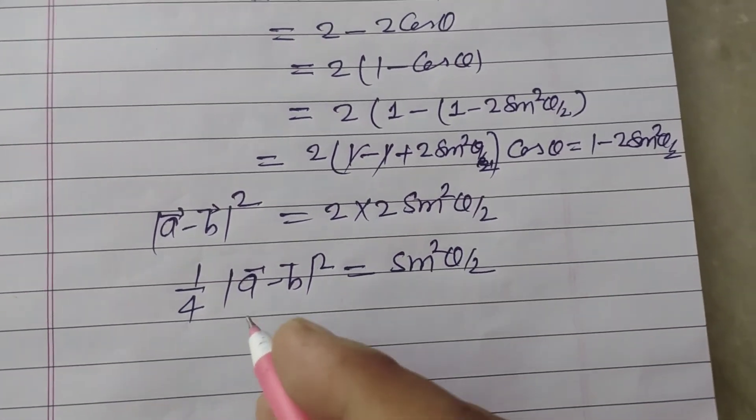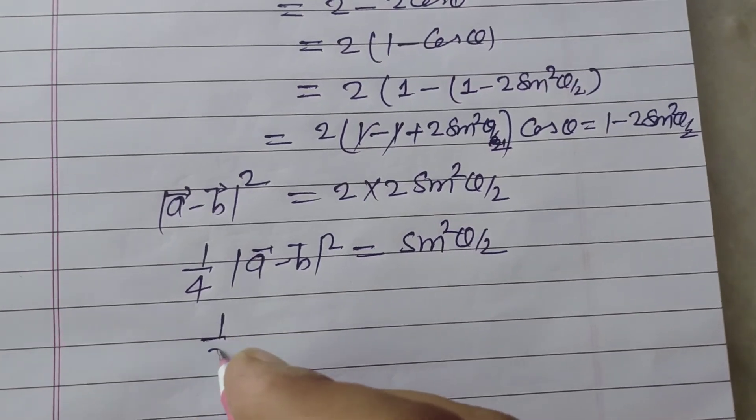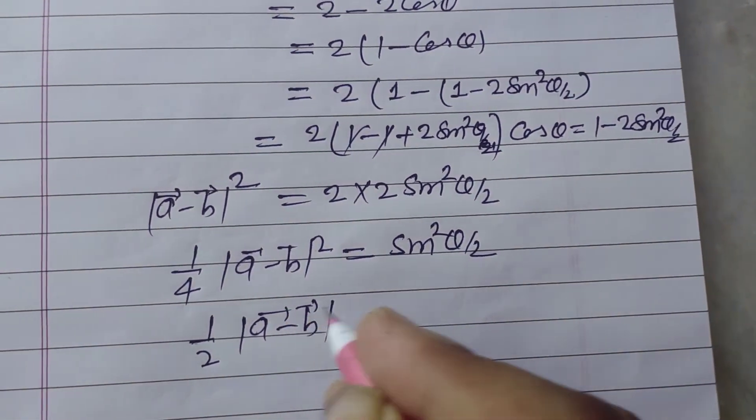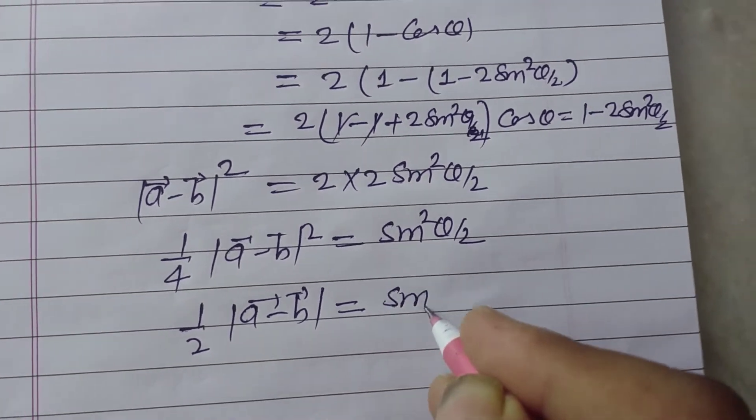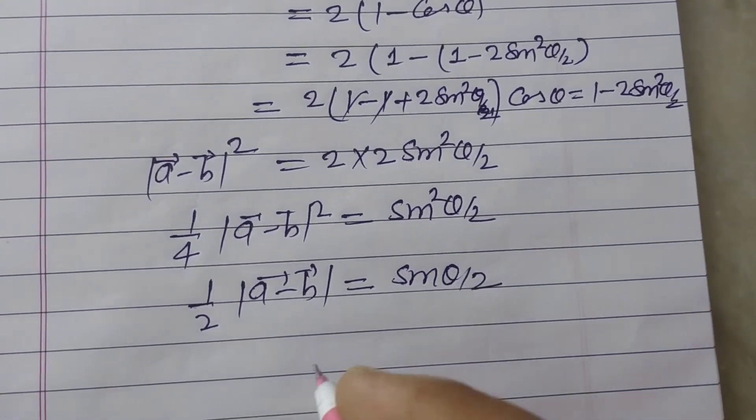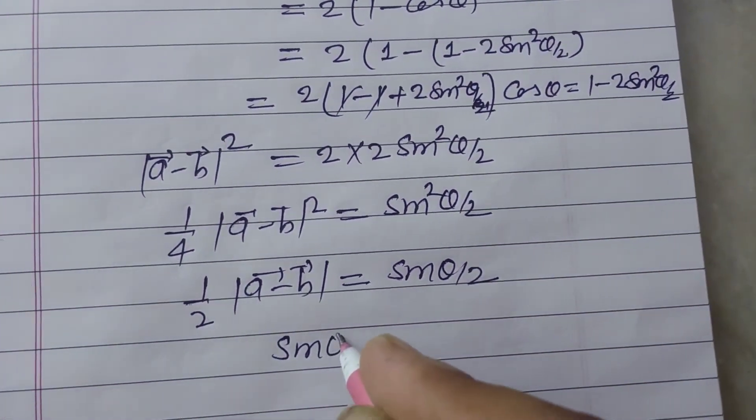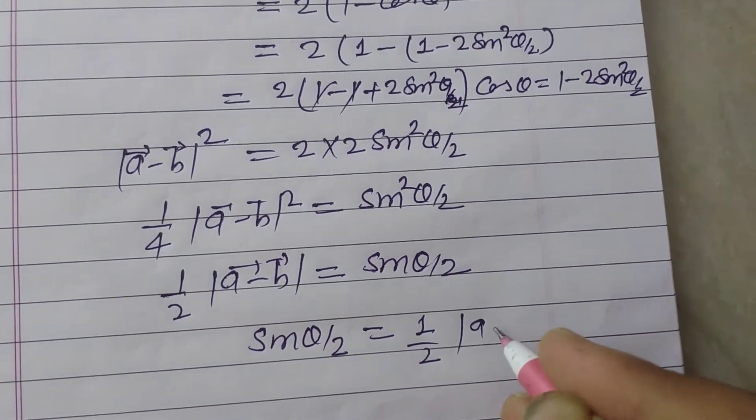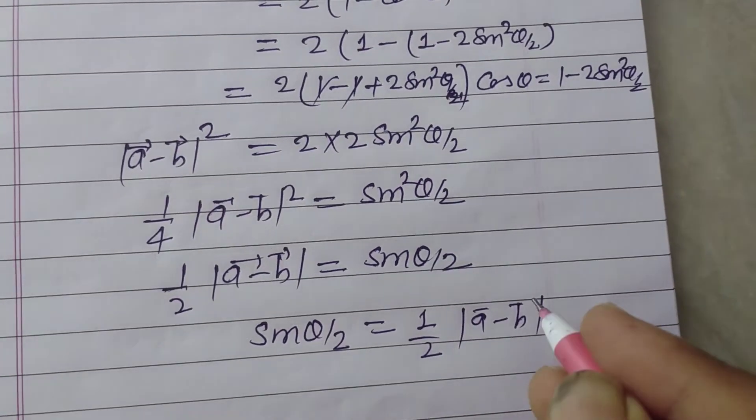Now taking root both sides we got 1 by 2 vector A minus vector B mode equal to sin theta by 2. Therefore sin theta by 2 equal to half of vector A minus vector B mode.